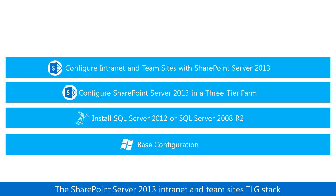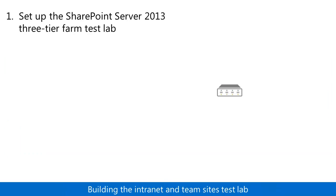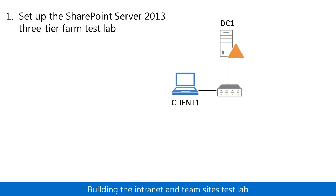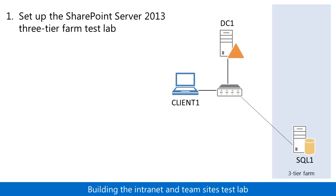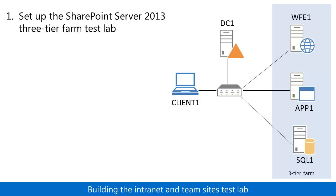Now let's build it out. In step one, you configure the SharePoint Server 2013 3-Tier Farm Test Lab. This lab consists of DC1, the Active Directory Domain Services, or ADDS Domain Controller, Client1, a web client computer, and the computers of the 3-Tier Farm: SQL1, the database server, App1, the application server, and WFE1, the front-end web server.